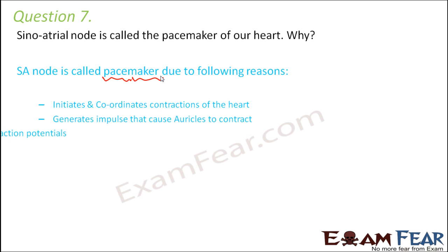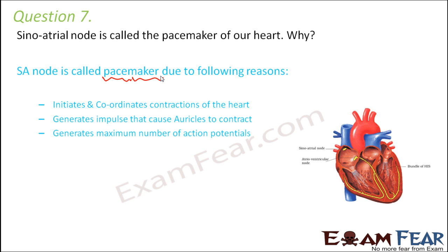The SA node generates impulses that cause the auricles to contract and produces the maximum number of action potentials. Every time the SA node generates an impulse, one cardiac cycle takes place. It has been observed that the SA node can generate around 70 to 75 impulses per minute, which is why our heart beats approximately 72 times per minute. These are the reasons why it is called the pacemaker of the heart.